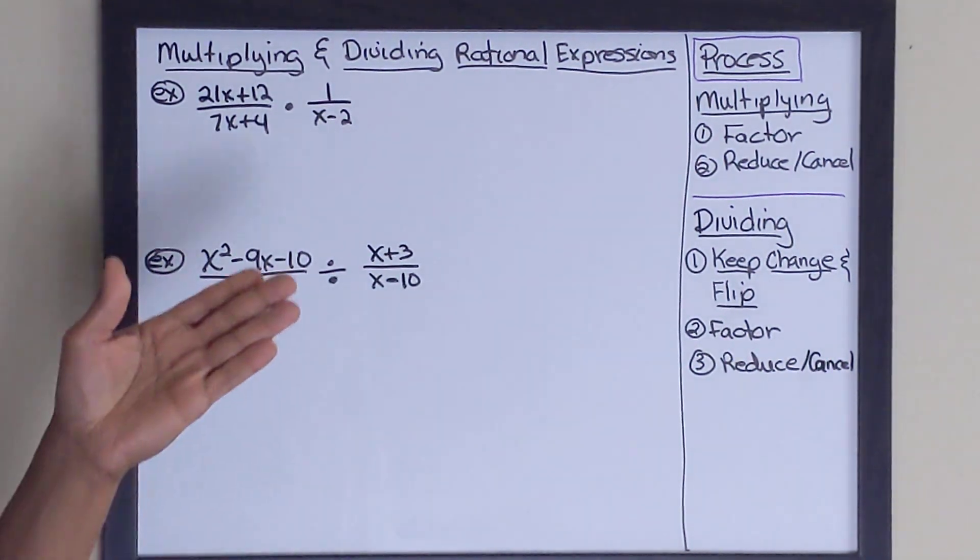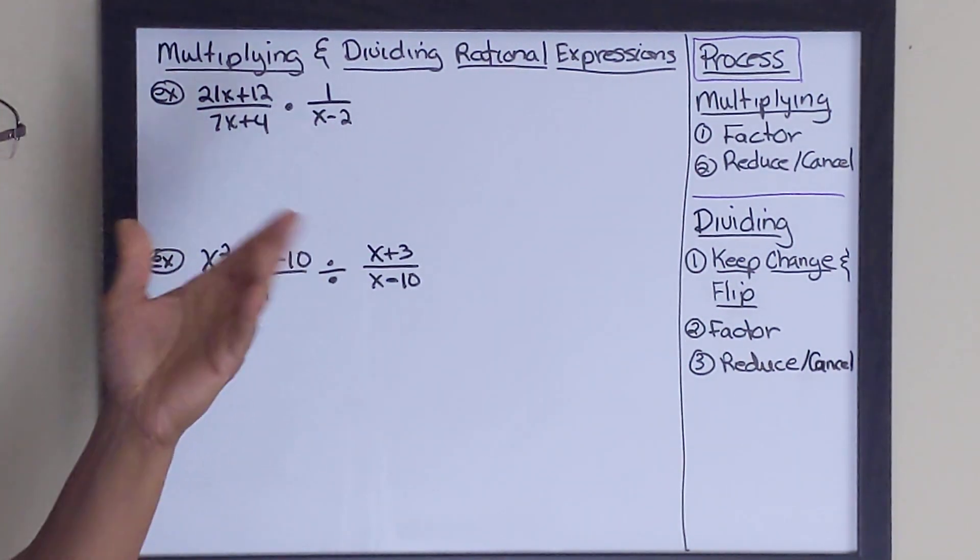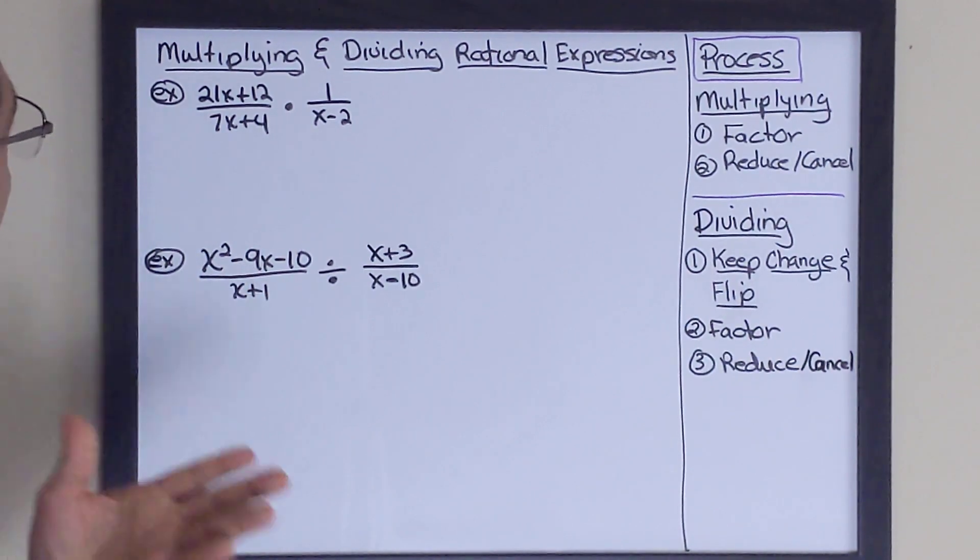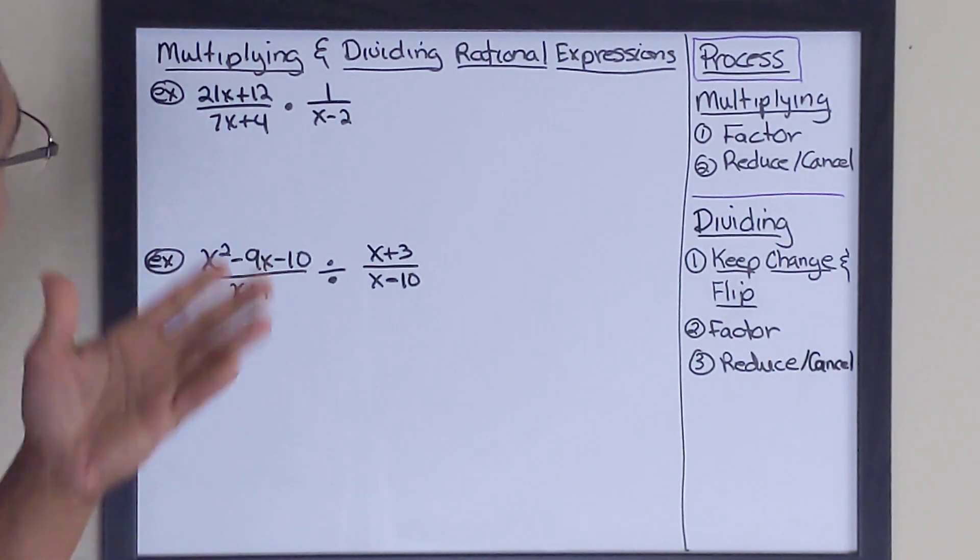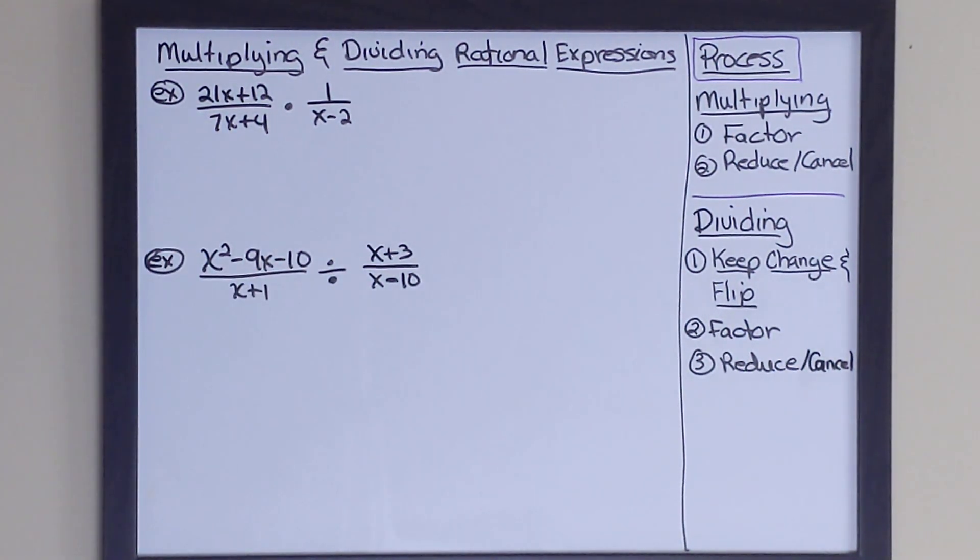Once again, keep in mind, rational expressions are nothing more than fractions with some form of variable, either monomial, binomial, or trinomial, or some form of a polynomial.